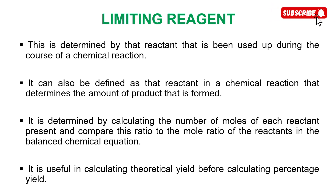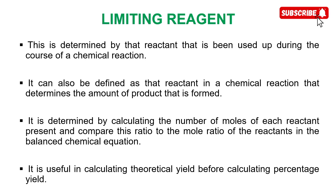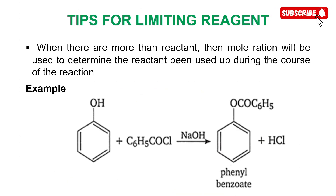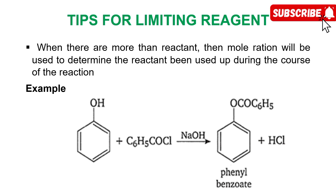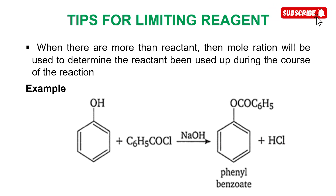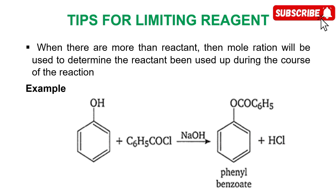This limiting reagent is very useful in calculating your theoretical yield, which is needed to calculate your percentage yield. To determine the limiting reagent, we have a scenario where we have more than one reactant — for example, in the Schotten-Baumann reaction where phenol reacts with benzoyl chloride. Sodium hydrogen carbonate acts as a reagent but is not the major reactant, so when talking about the limiting reagent we consider phenol and benzoyl chloride. Calculate their mole ratio — the lesser one is the limiting reagent.